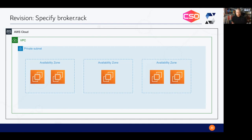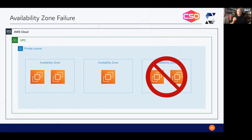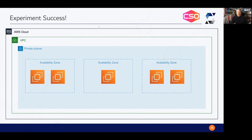We add the broker.rack configuration parameter and restart Kafka. We're back up and running in the normal state, and we run the experiment again. Two nodes in availability zone 2C get terminated, and we run for the 10-minute timeout. At 10 minutes, we pass. We have successfully proven that we can withstand that type of failure: two nodes going down, and we can still service traffic.